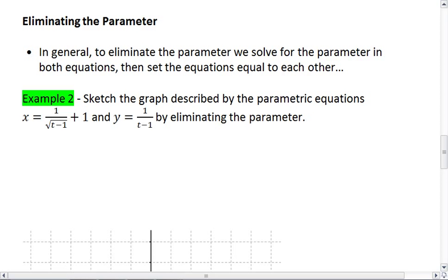In general, to eliminate the parameter, we solve for the parameter in both equations and then set the equations equal to each other.